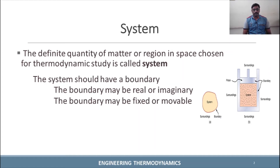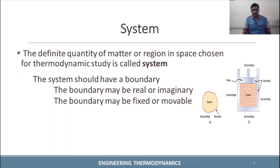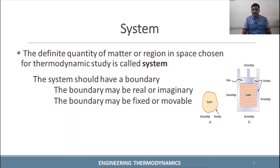The boundary can also be moveable. For example, if you have a piston-cylinder setup, the piston represents a moveable boundary. If we have a room as our system for thermodynamic analysis — with heat load and air conditioning — the walls, ceiling, and floor form a real boundary. At the same time, there can be an imaginary boundary as well.